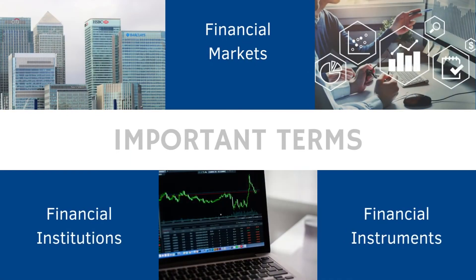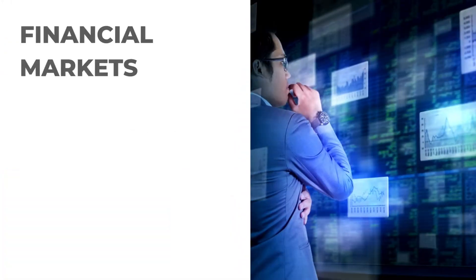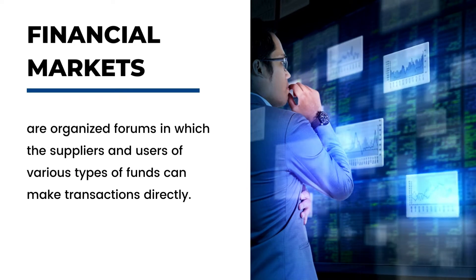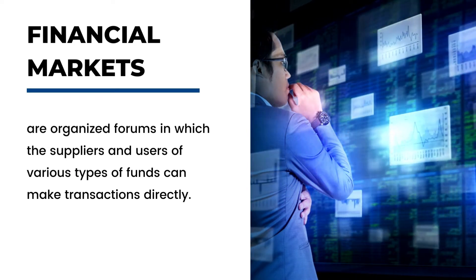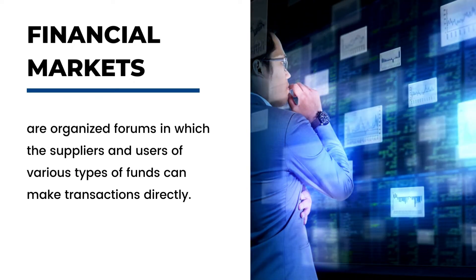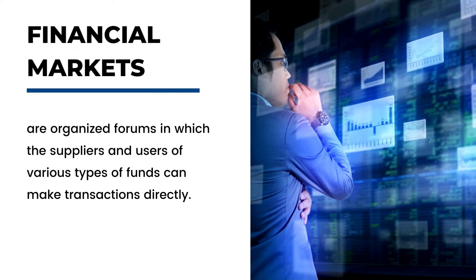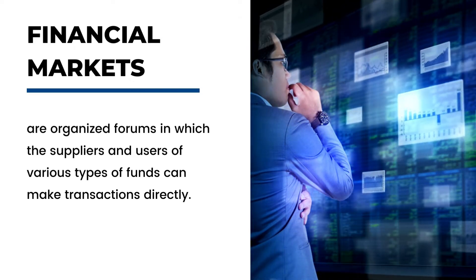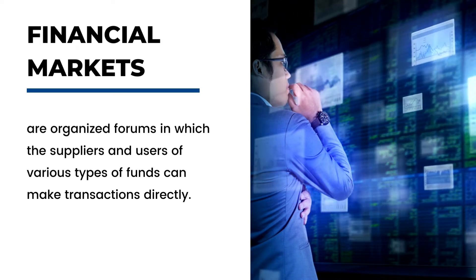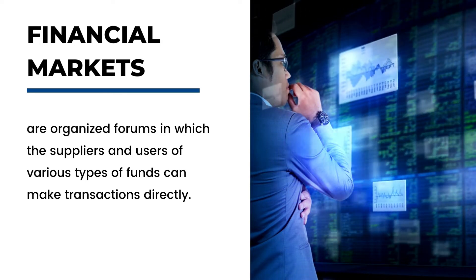To begin with, let us define these important basic terms: financial markets, financial institutions, and financial instruments. Financial markets are organized forums in which the suppliers and users of various types of funds can make transactions directly. They act as a conduit for funds to flow from lenders to borrowers, or savers to spenders.